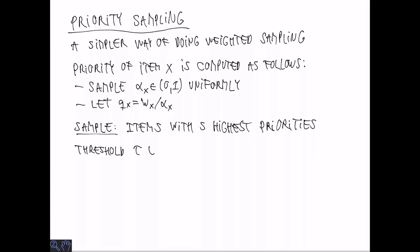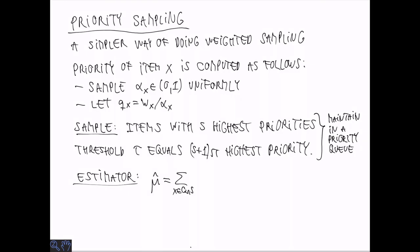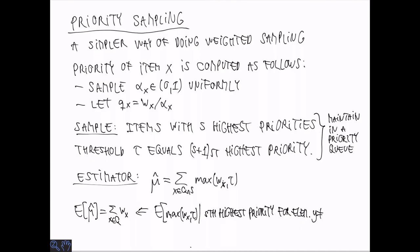In order to give an estimator, we need to define the threshold, which becomes equal to the s plus first highest priority. So the highest priority that is not sampled. We can maintain the sample and also the threshold using a priority queue. Now the unbiased estimator mu hat is again a sum over all the samples in the set Q that we care about. And what we sum is the maximum of 1 and the weight wx over tau, this threshold. Now I claim that this is an unbiased estimator. That is that the expected value of mu hat is exactly the weight of x. This is for the case of a single element.